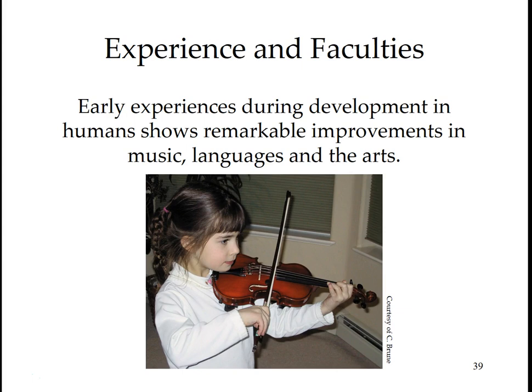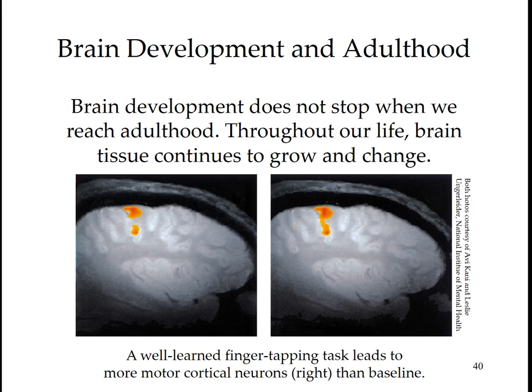Normal stimulation during early years is critical for optimal brain development. After brain maturation provides an abundance of neural connections, experiences preserve activated connections while unused connections degenerate — a process called pruning. Experiences modify neural tissue at the very place in the brain that processes the experience. Sights, smells, and touches strengthen some neural pathways while others weaken from disuse. Early experiences in humans show remarkable improvements in music, languages, and arts. Brain development does not stop at adulthood; throughout life, brain tissue continues to grow — a well-learned finger tapping task leads to more motor cortical neurons.